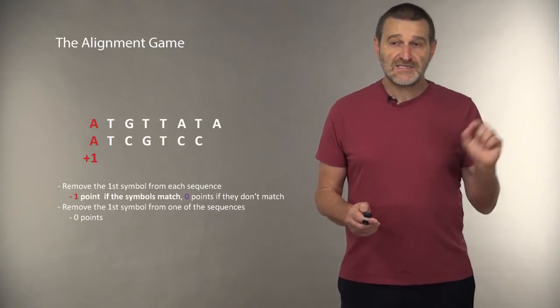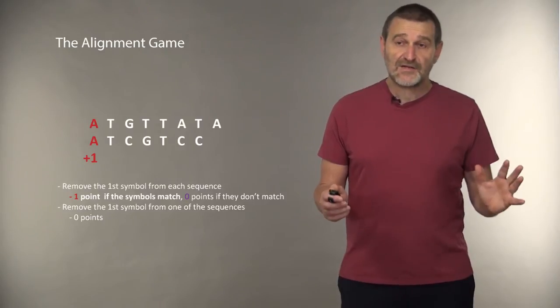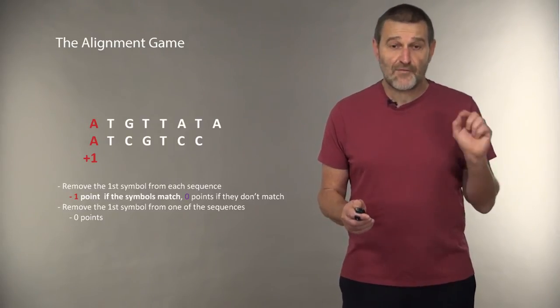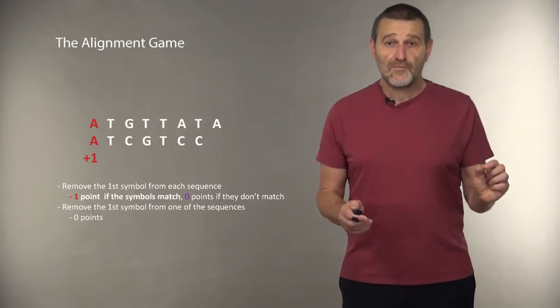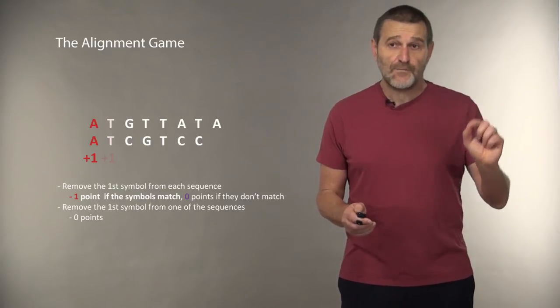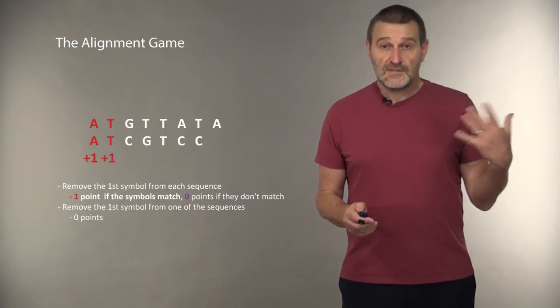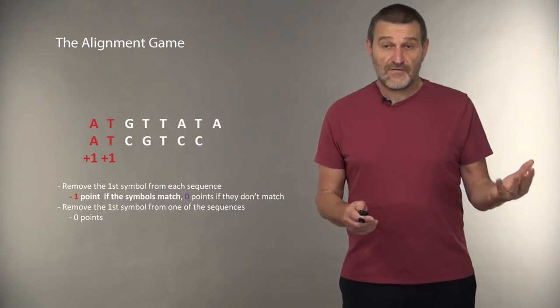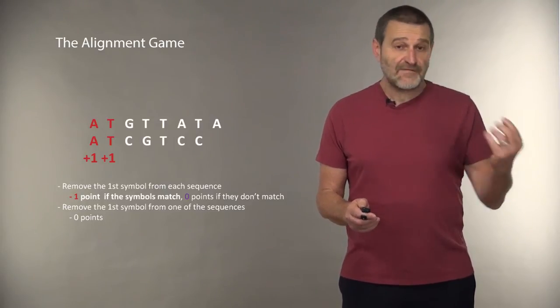Let's start. So this is our sequencing, and we got lucky. They both start from A. We remove A from both sequences, and we get one point. Now, the sequences start from T. Once again, we remove both T, and we get another point.